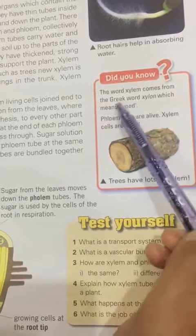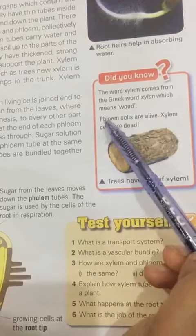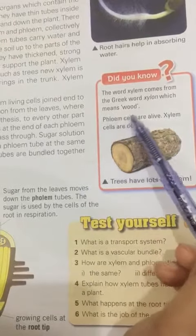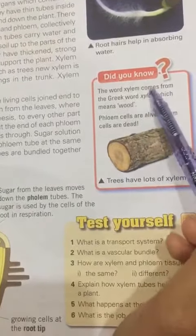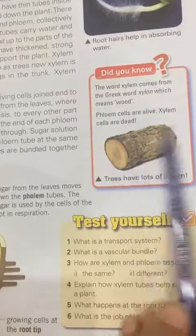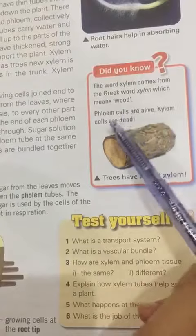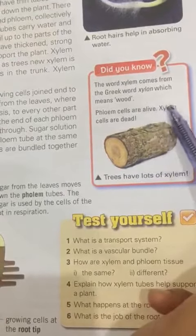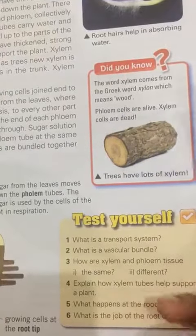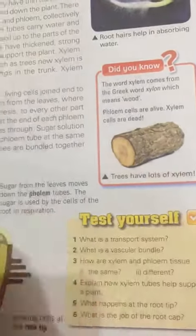Wood is called xylem in Greek. Phloem cells are alive, whereas xylem cells are dead. Phloem cells are alive and xylem cells are dead cells.